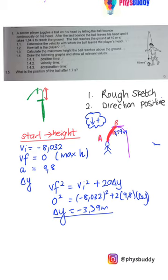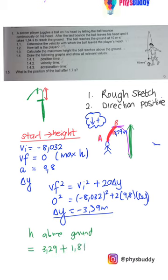The question asks for the maximum height above the ground. To get the total height above the ground, we take the maximum height above the boy's head — 3.29 meters — plus the height of the boy — 1.81 meters — and that gives us 5.10 meters. That is the maximum height reached by the ball above the ground.